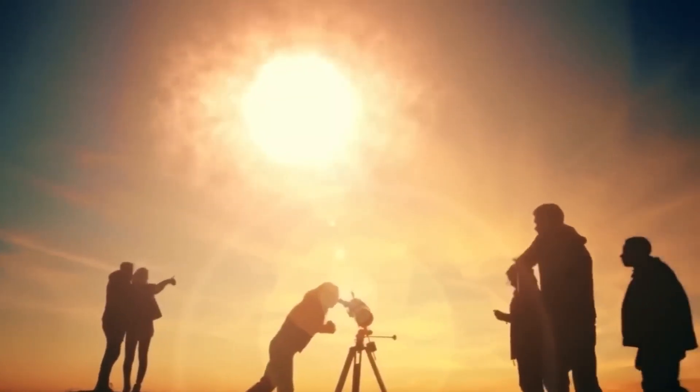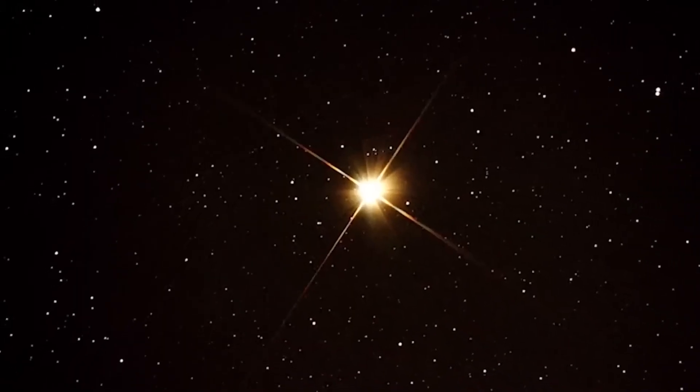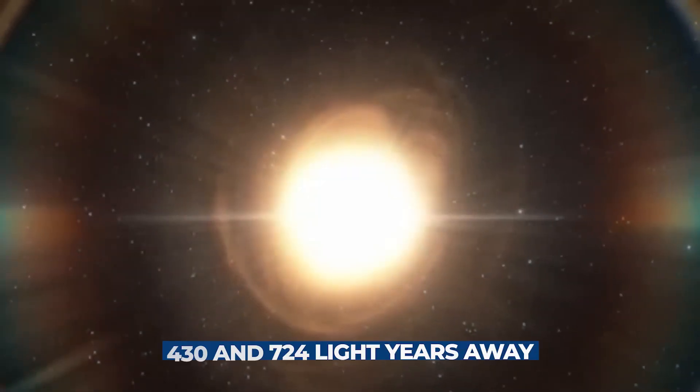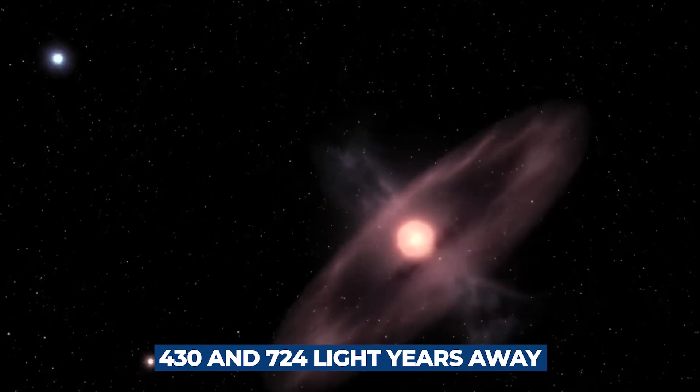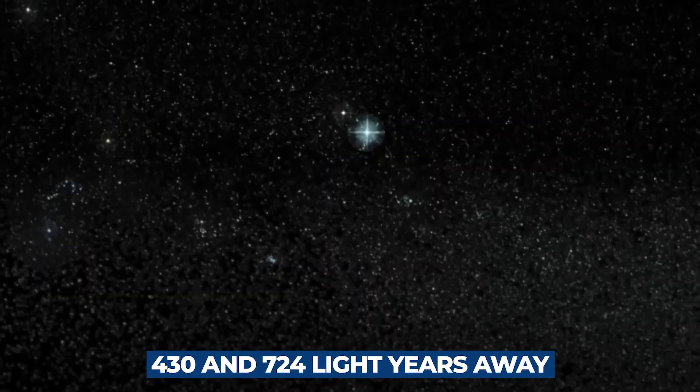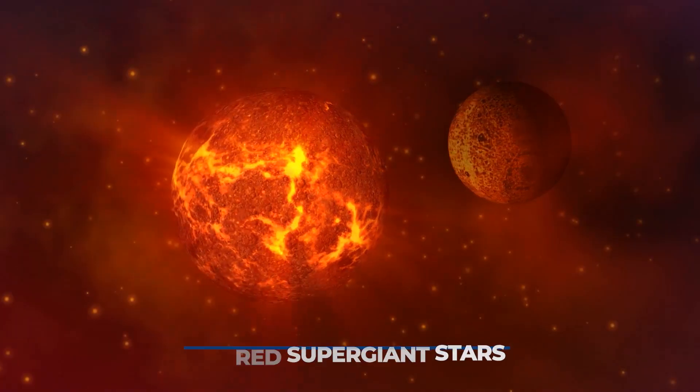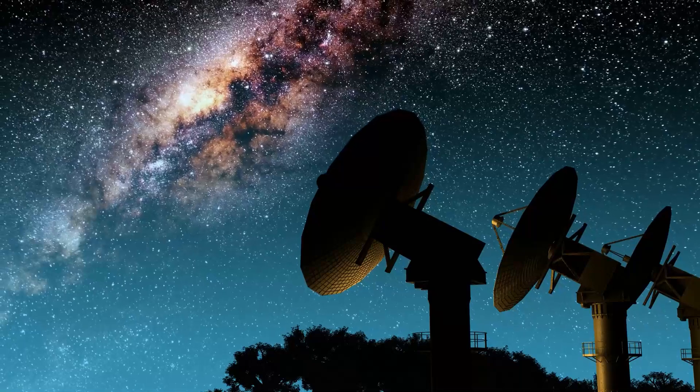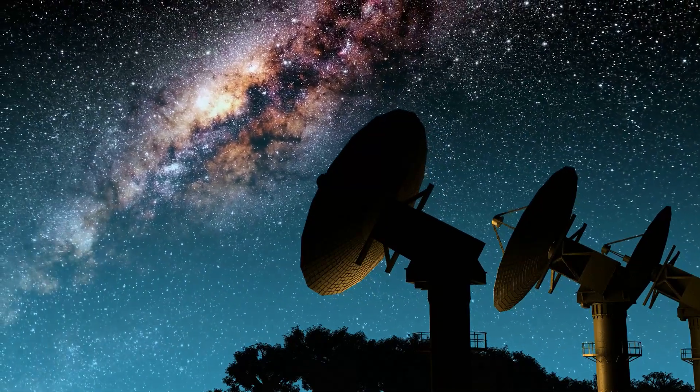Surprisingly, astronomers have not been able to pinpoint Betelgeuse's precise distance from Earth, however, they believe it to be between 430 and 724 light-years away. In our galaxy, just 200 red supergiant stars have been discovered, and Betelgeuse is the most visible and closest one.